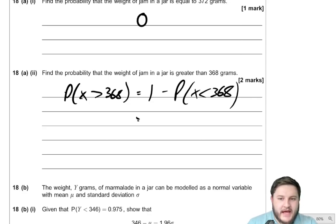So it's just 1 minus the probability of X being less than 368. And if you put that in the calculator, I believe you get 0.873, 0.87345 is the final answer there. So a nice little normal distribution question there, a little bit of probability, a bit of calculator work as well.